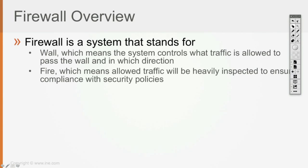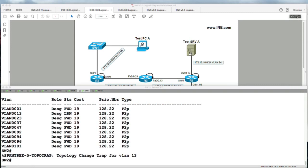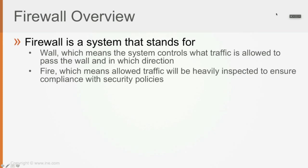A firewall is a system — and usually when you don't know what something means, knowing the acronym or name helps. For example, OCSP stands for Online Certificate Services Protocol, so just knowing the name tells you what it does. Similarly, 'firewall' is composed of two words: 'wall' and 'fire.' The wall means the system controls what traffic is allowed to pass and in which direction, like a regular wall. The 'fire' part means allowed traffic will be heavily inspected to ensure compliance with security policy.